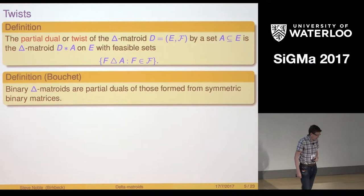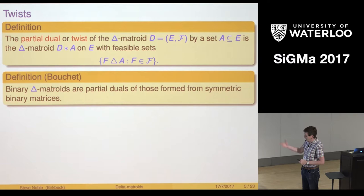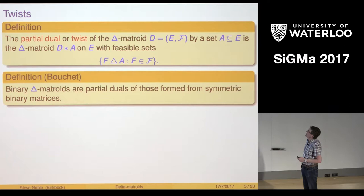One reason why you might want to do that is that we have the convention that the empty set is always a feasible set in what we did on the previous slide, so unless I do this I've always got the empty set as a feasible set in my Delta Matroid and this gives me a bit more flexibility.